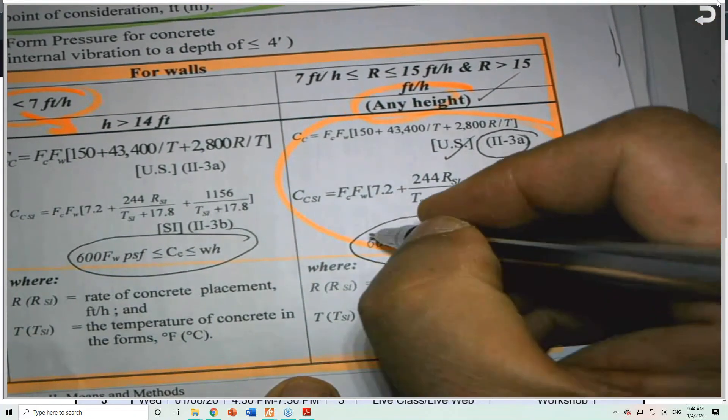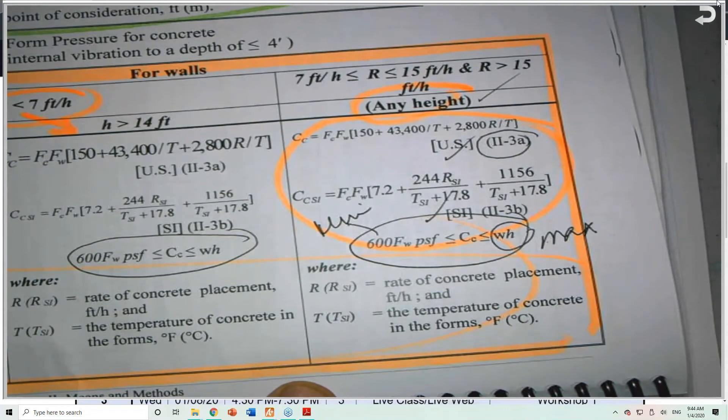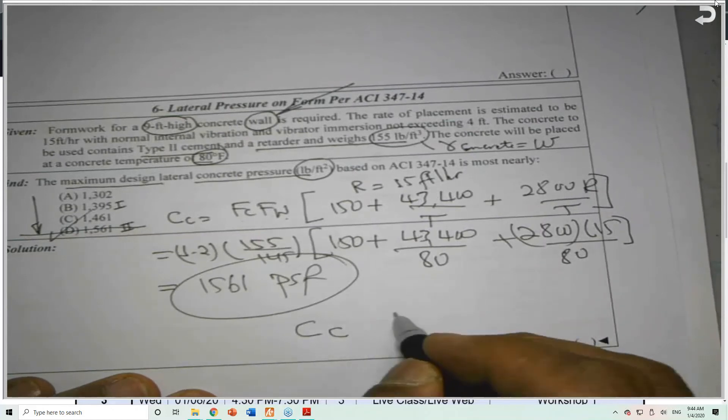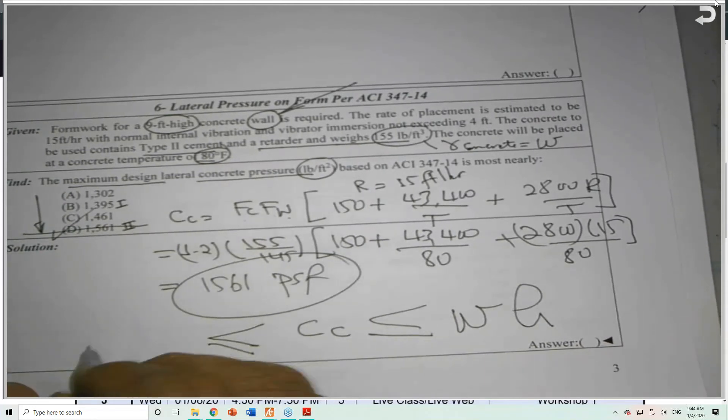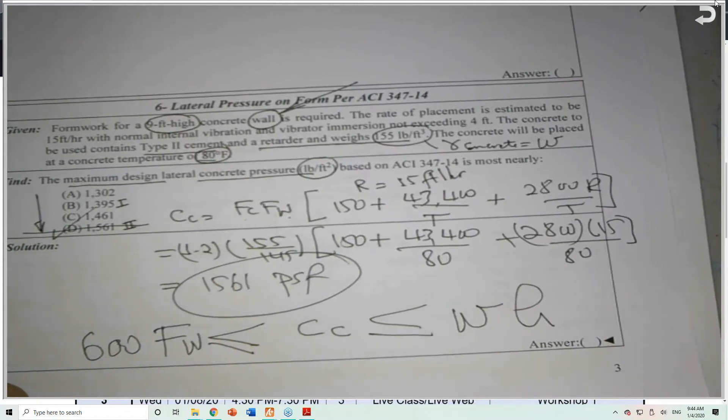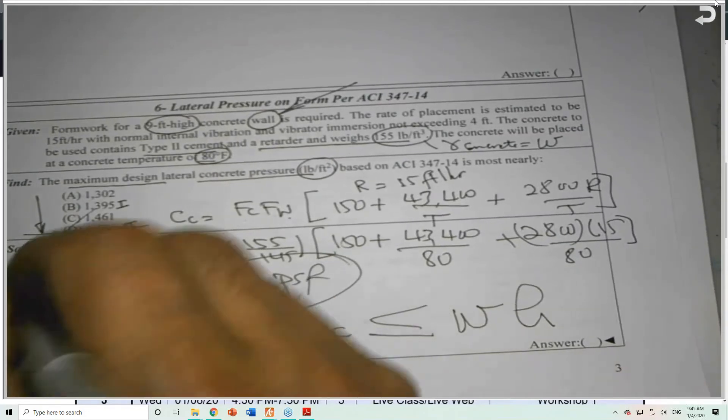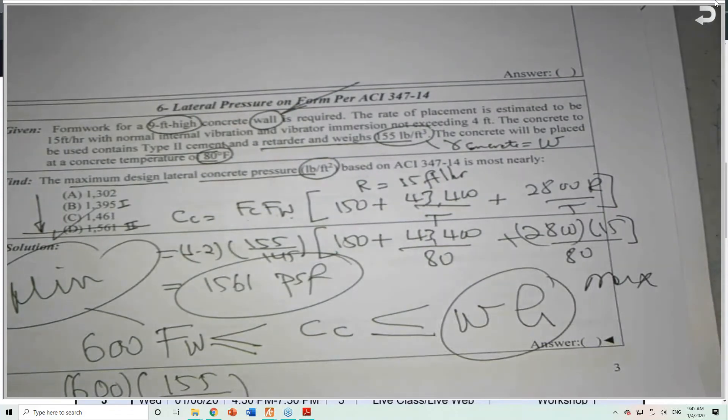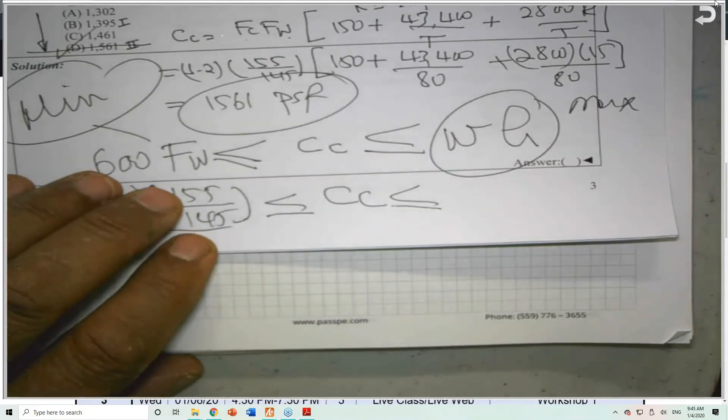Under this equation here they are saying be careful, Mr. Mansour, there is a minimum and there is a max. I should verify this before I proceed to select my answer. So if you look to the minimum and the maximum, I will see. They are saying Cc should be less than or equal to WH, and it should not exceed, sorry, it should exceed the 600 times Fw. I have Fw, so 600 times 155 over 145, this is the min by the way. And this is the max.